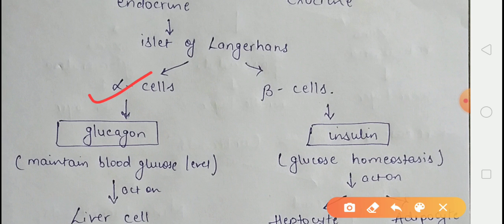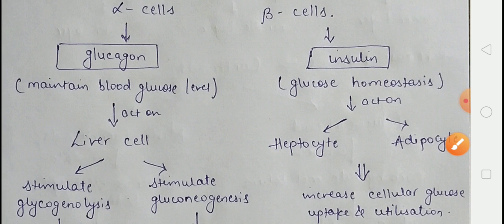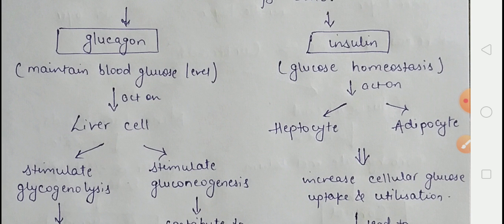Now we talk about beta cells. The beta cells secrete a peptide hormone called insulin. Insulin normally maintains glucose homeostasis — meaning it maintains the balance between insulin and glucagon to regulate blood glucose level. Insulin acts on two types of cells: hepatocytes and adipocytes, the fat-storing cells.